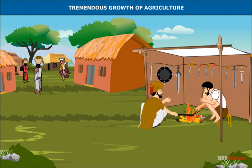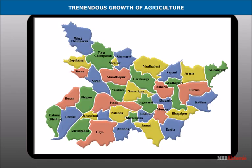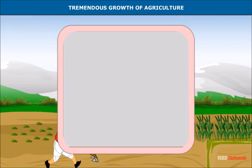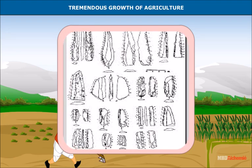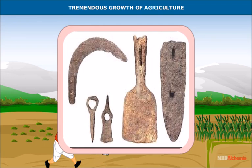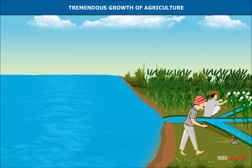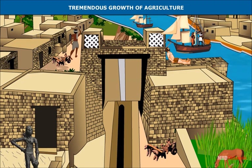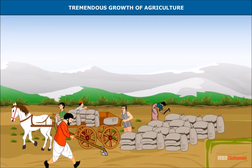In the sixth century BC, the widespread use of iron implements in eastern Uttar Pradesh and western Bihar led to tremendous growth of agriculture. The new iron agricultural tools allowed peasants to produce more food grains than they needed for their own consumption. Better agricultural techniques such as transplantation and ample irrigation from tanks, canals, wells, and artificial lakes also served to increase production.